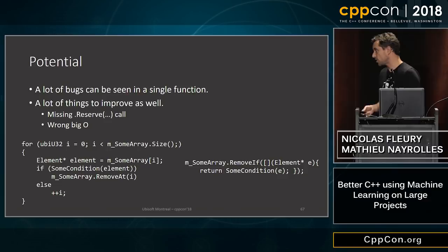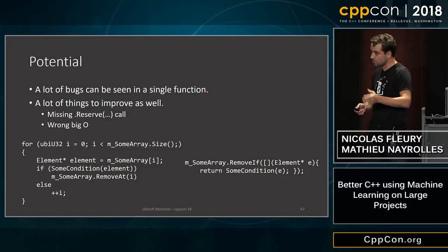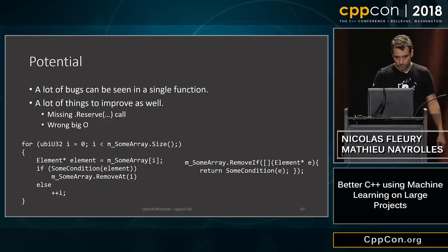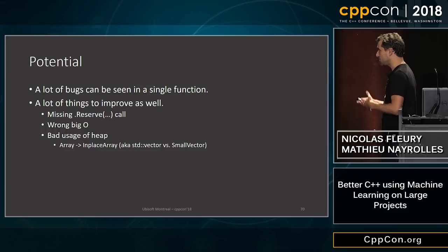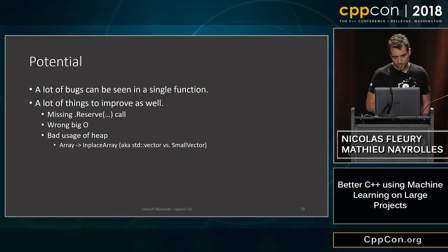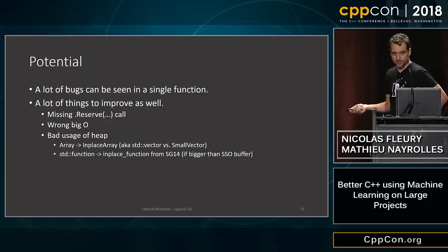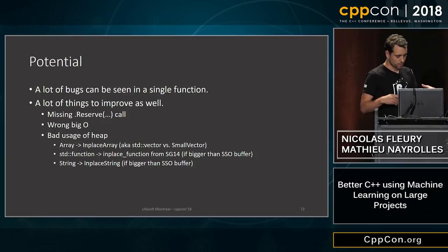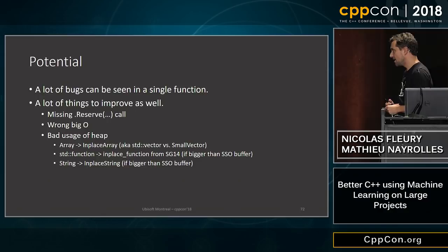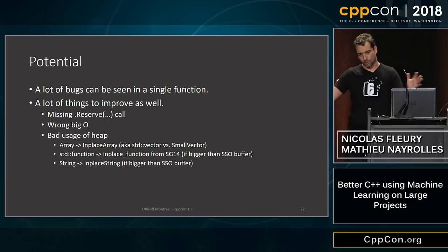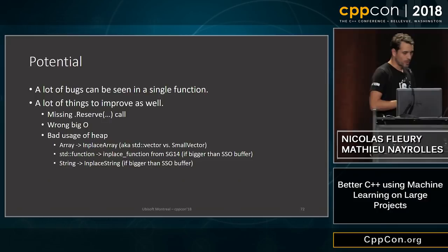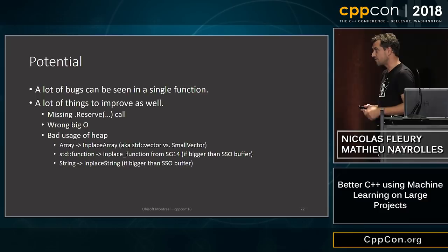These performance cases are not bugs, so we may need to reinforce the system for some of them. These are things like missing reserve calls to STD vector-like containers or a wrong big-O algorithm being chosen. For example, someone removing elements from a STD vector-like container: if preserving order and removing multiple ones, it's faster to call a wrapper over std::remove_if. Also, less use of heap — which in the game industry means less heap usage is better. This covers in-place array and fixed-size array, in-place function instead of std::function, and in-place string instead of string.